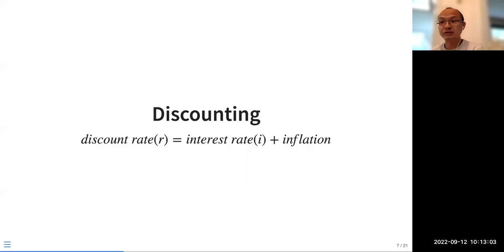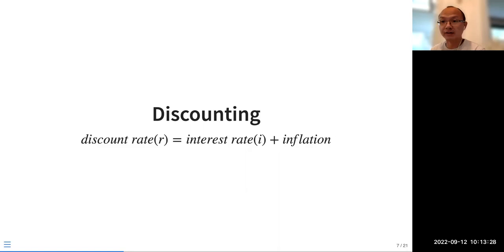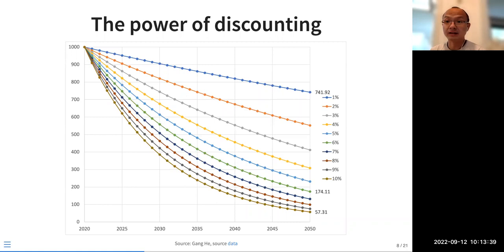Pay attention to those terms and read carefully what the question asks. Very often when you deal with a bank, it's just the interest rate. But if you do project economics, you need to consider inflation and apply the discount rate. Very often the question will give you the discount rate. If there's no specific inflation number, you can assume there's no inflation unless the question asks you to include it.